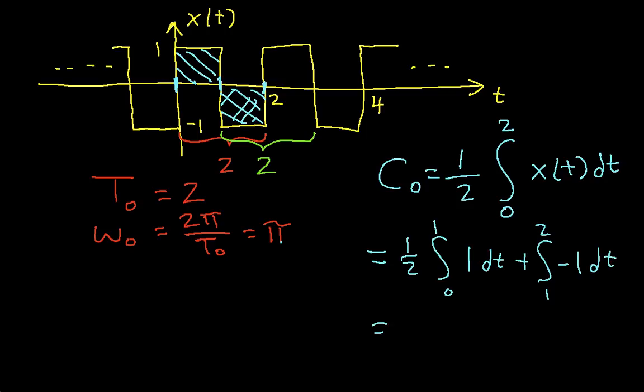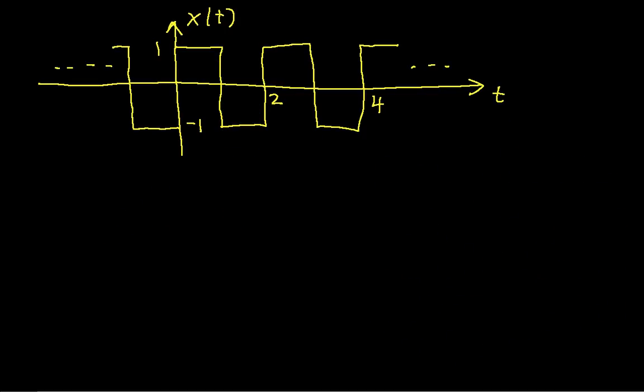If I work that out, and this 1 half should be in front of everything, I have 1 half times, working the first integral out here, I get 1. Working the second integral out, I get negative 1. So it's going to be 0. Which is what you would expect. The average of the signal is 0.